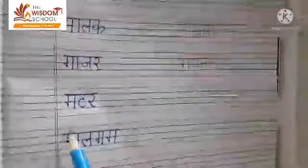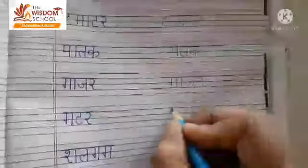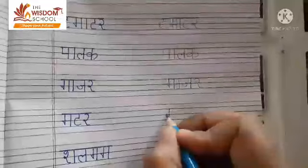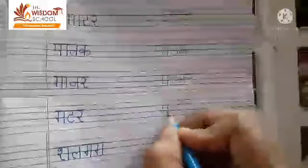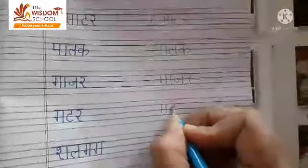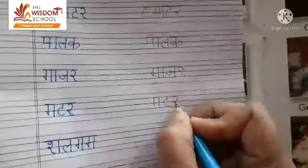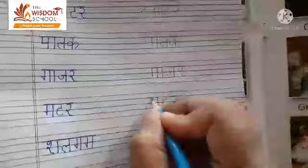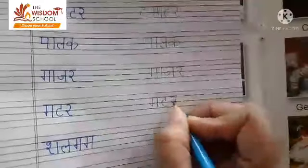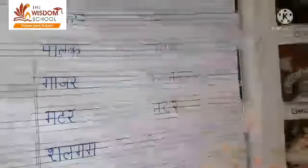Next is matar. Matar. Matar kya hoti hai? — What is matar? Peas. Green peas. Hai na? Matar.